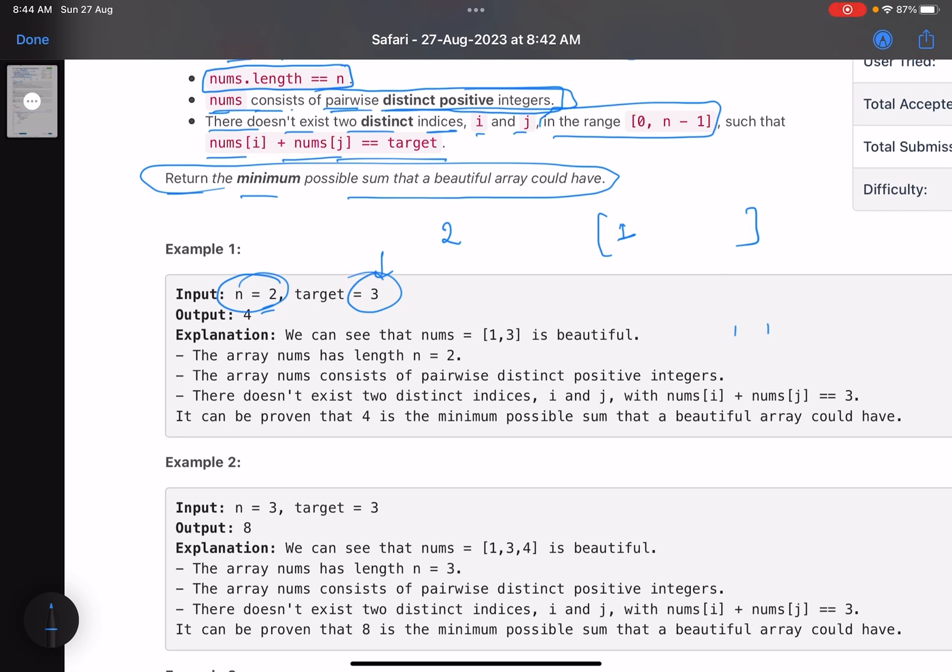Remember the second condition: nums consists of pairwise distinct positive integers. Now the second number is two. Let's check: can I put two? How do I check it? My target is three, the current number that I want to put is two. That means one is the number which will pair up with two to give you the target. So what should I do? If I want to insert two, one should not be present, otherwise one and two will form a pair to give you a target of three. Can I insert two? No, because you already have one. So move forward. Two cannot be inserted.